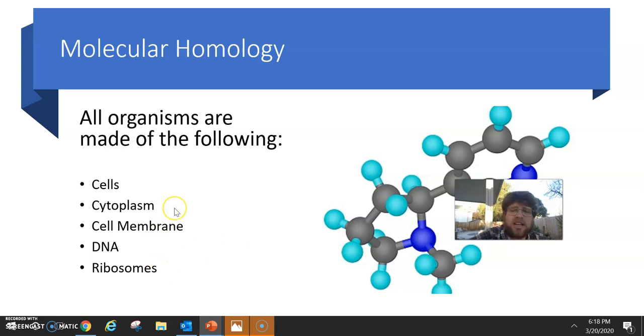So, the cell gives us some pretty good evidence that we have been evolving. We come from a common ancestor. Okay. All 2 million species have cells.